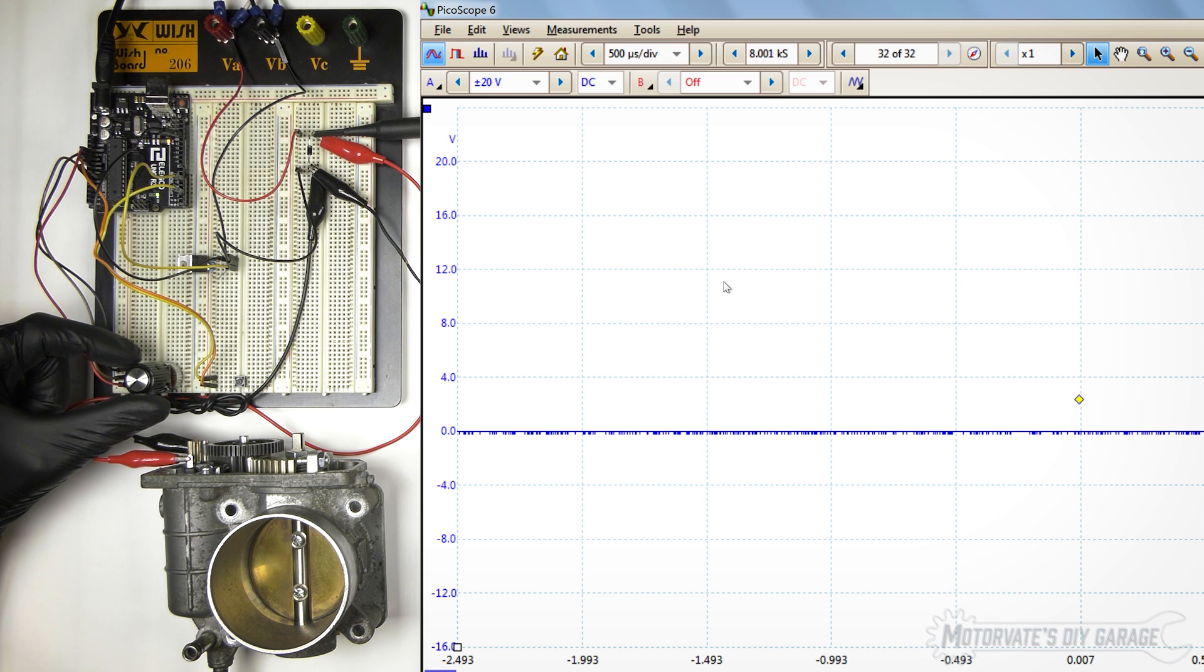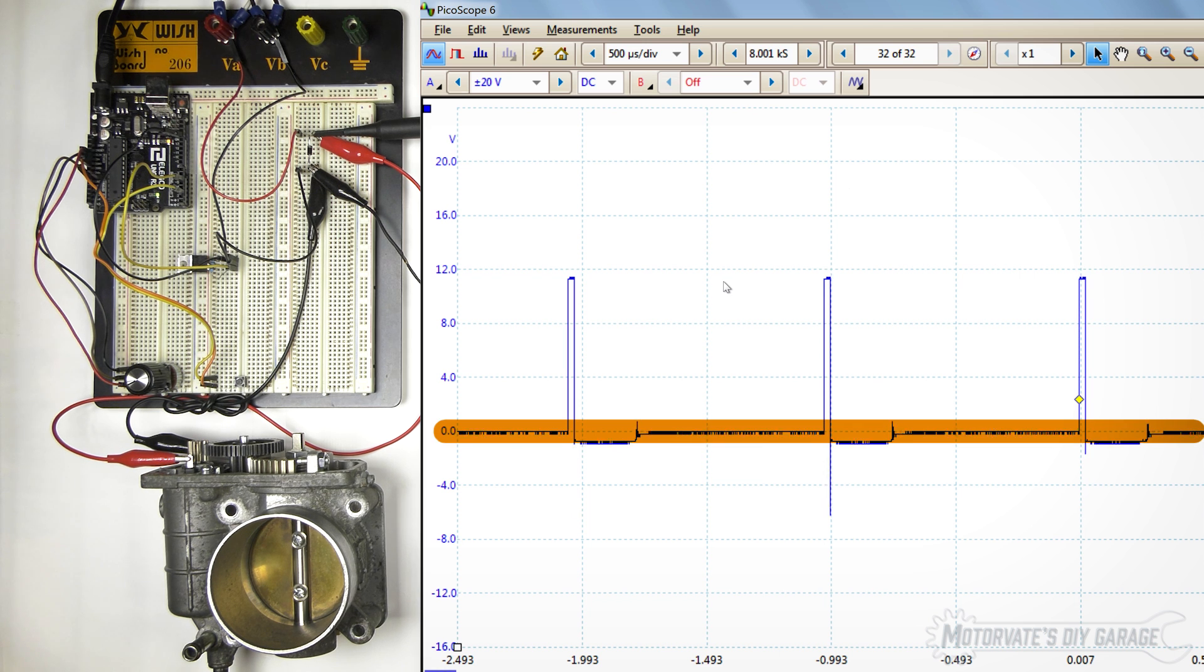And now, we will slowly turn this up. And we can see. So, this line here is 0 volts. And this line up here is just under 12 volts. Now, the time that it's on for is this little bit of a peak right here. So, right now, it's not on for very much. It's on for about 2, 2.4%.